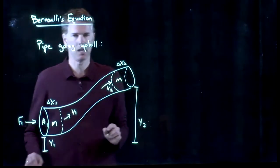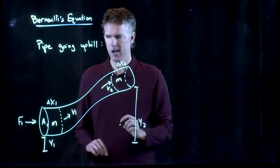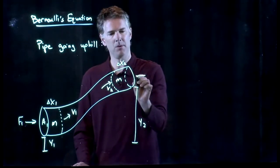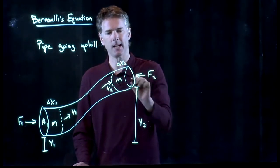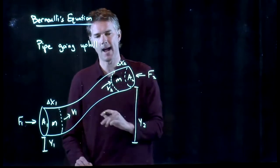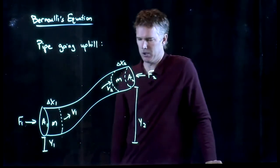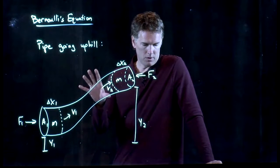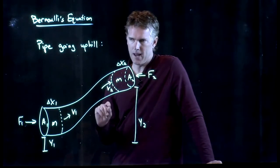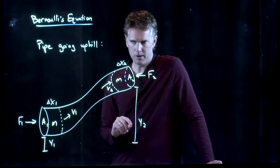It's going to act on the end of the pipe, cross-sectional area A1. And there might be some force pushing back against you, F2, acting on the end of the pipe, A2. Those are all the parameters that we need to now derive Bernoulli's equation.